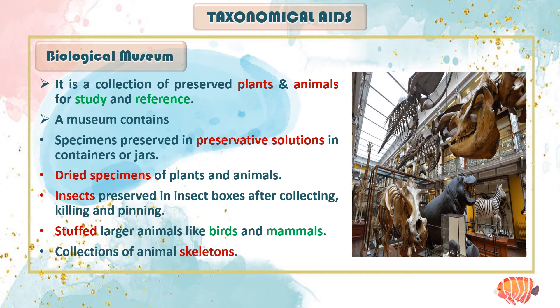Biological museum is another new taxonomical aid. It is a collection of preserved plants and animals for study and reference. The first thing to note is that unlike a botanical garden, the items in a museum are not live — they are collected and preserved.